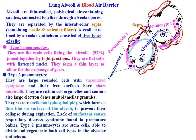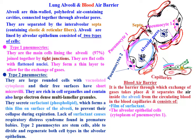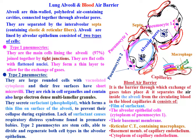Type 2 pneumocytes are stem cells capable of dividing and regenerating both cell types in the alveolar epithelium. The blood-air barrier is the barrier through which exchange of gases takes place. It separates the air inside the alveoli from the circulating blood in the blood capillaries, and consists of: a film of surfactant, the alveolar epithelium cells (cytoplasm of pneumocyte type 1), their basement membrane, reticular connective tissue containing macrophages, basement membrane of the capillary endothelium, and the cytoplasm of the endothelium of blood capillaries.